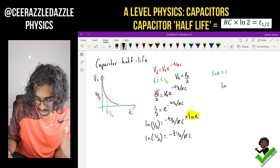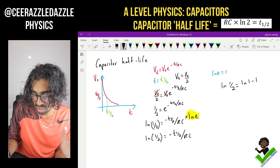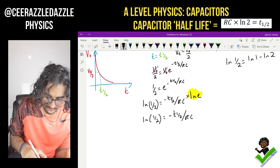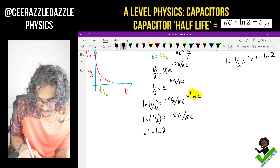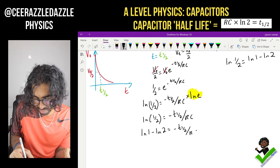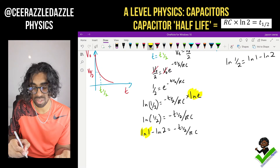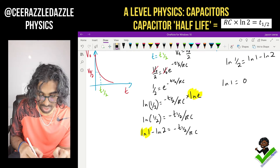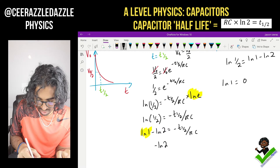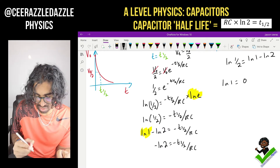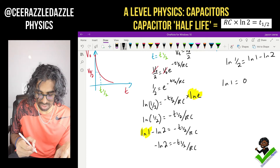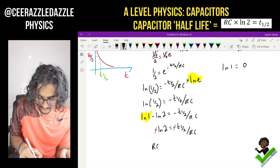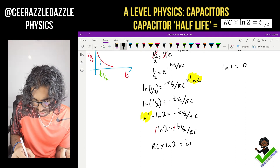Using the rules of logarithms, ln(½) can be written as ln(1) minus ln(2). We know that ln(1) equals zero, so that whole term becomes zero. Therefore it becomes: minus ln(2) equals minus t½ over RC. The minuses cancel out on both sides, and rearranging gives us RC times ln(2) equals t½, the half-life.